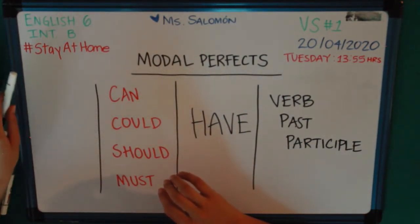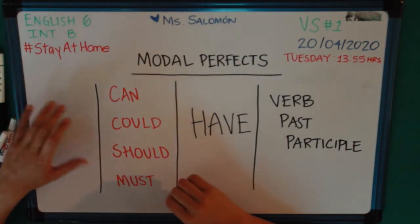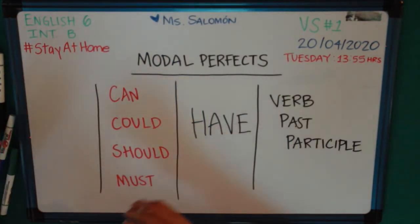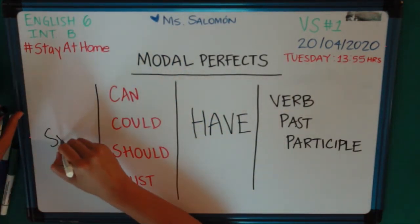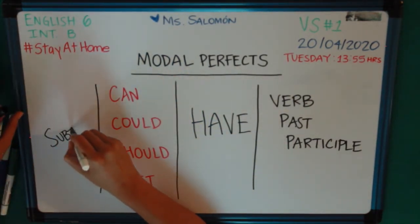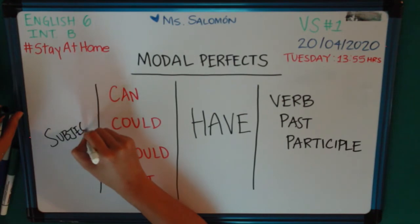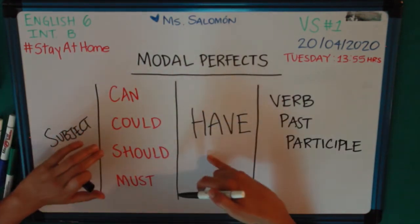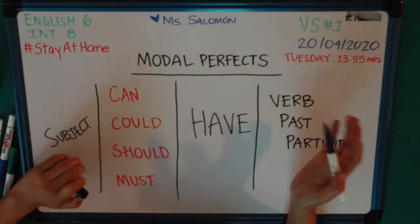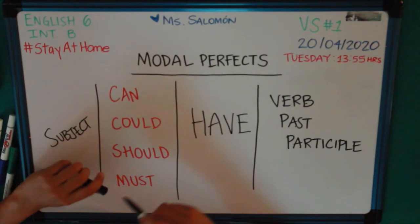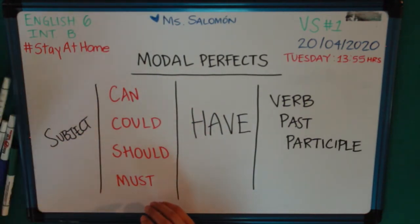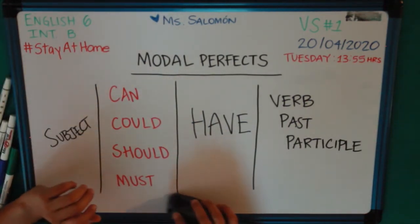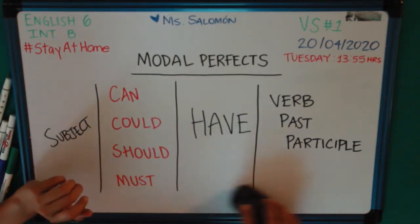In order for us to use this structure, we need to add a subject, a modal verb, 'have,' and a verb in past participle. For example, let's work on the next sentence.